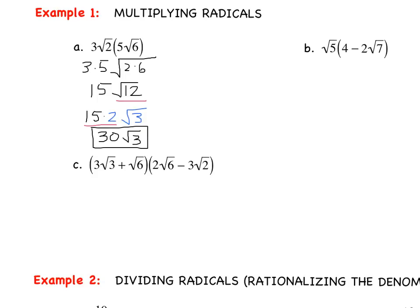Moving on to example B, we are going to distribute the square root of 5 to both terms inside that binomial, remembering coefficient times coefficient, radical times radical. When we distribute the root 5, there is a coefficient of 1. So 1 root 5 times 4 gives us 4 times the square root of 5, minus 1 times 2 is 2, and root 5 times root 7 is the square root of 35. Checking: root 5 and root 35 are both fully simplified, so our final answer is 4 root 5 minus 2 root 35.